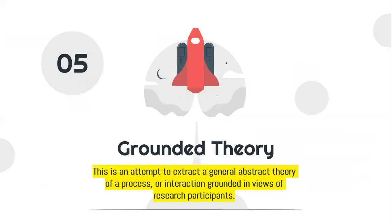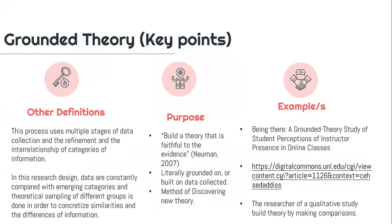The last design is grounded theory. The root word is 'ground.' This is an attempt to extract a general abstract theory of a process or interaction grounded in the views of the research participants. This process uses multiple stages of data collection and the refinement and interrelationship of categories of information. Data are constantly compared with emerging categories, and theoretical sampling of different groups is done in order to concretize similarities and differences of information. The purpose is to build a theory that is faithful to the evidence, according to Newman, 2007.